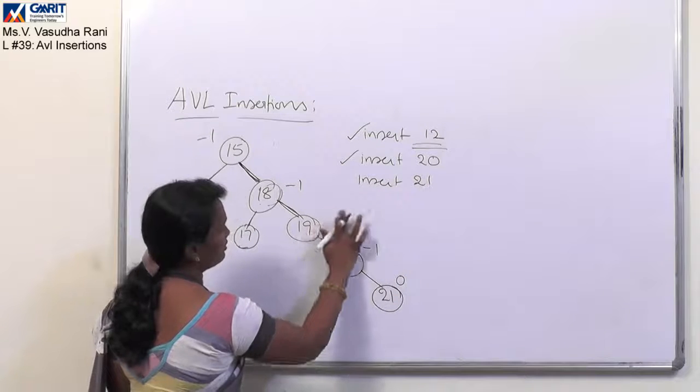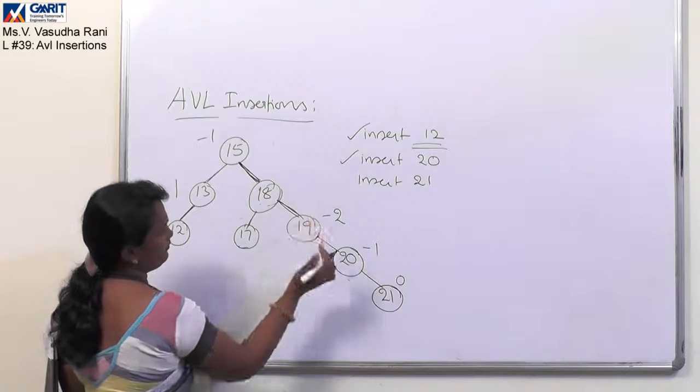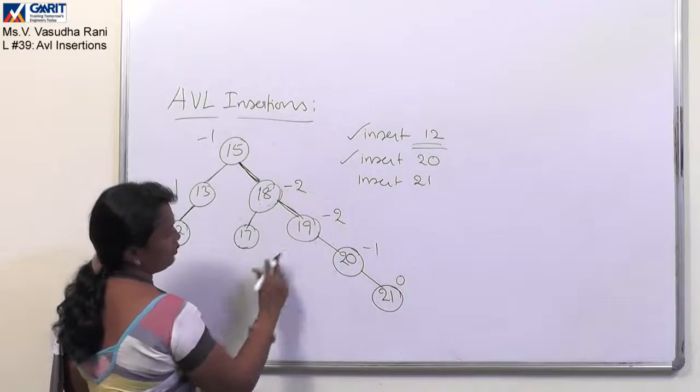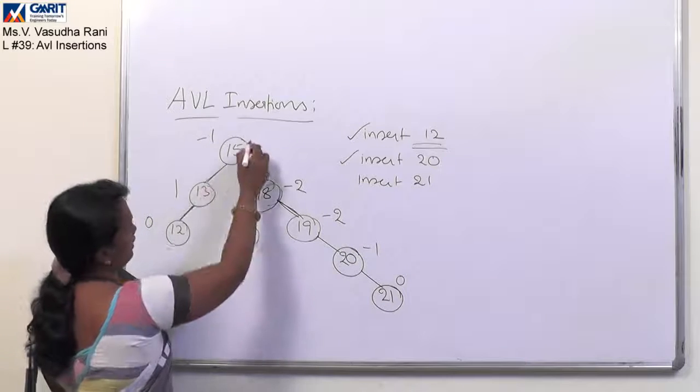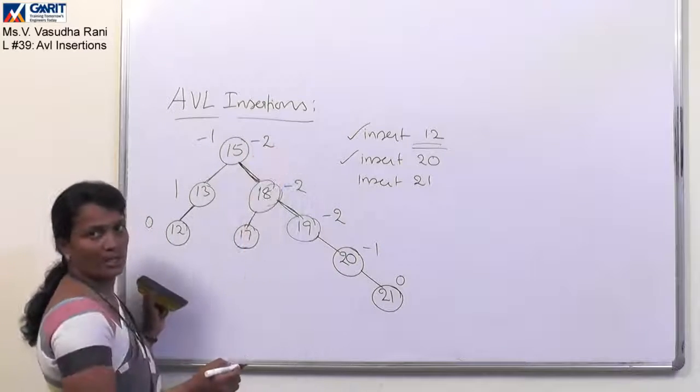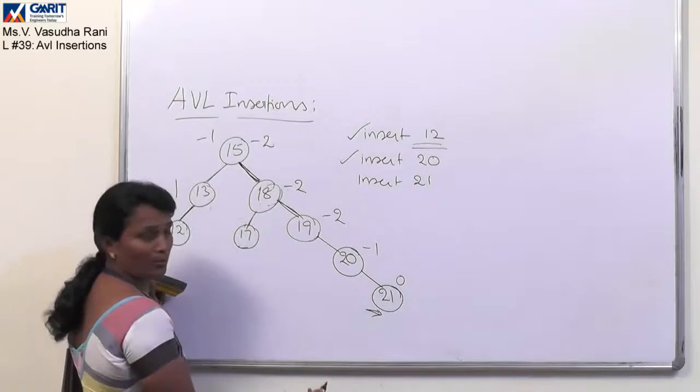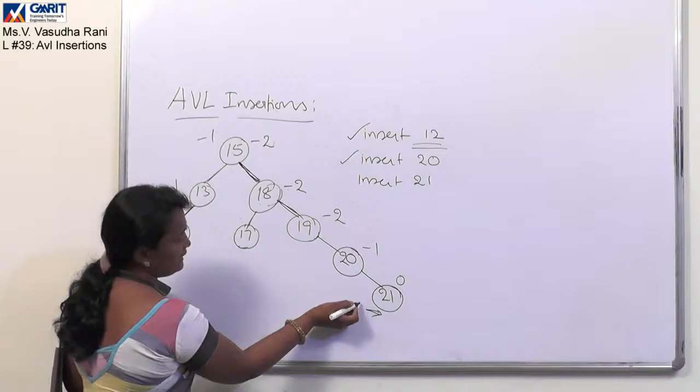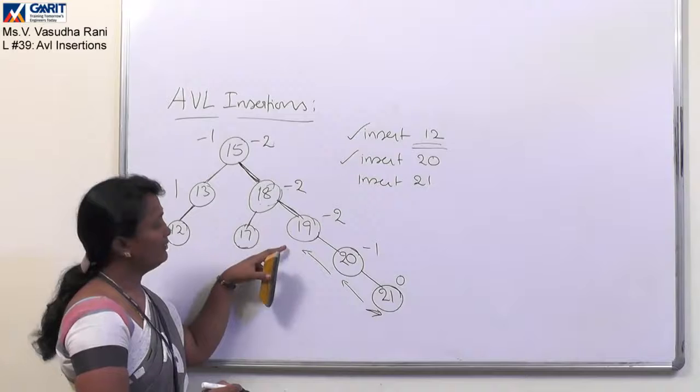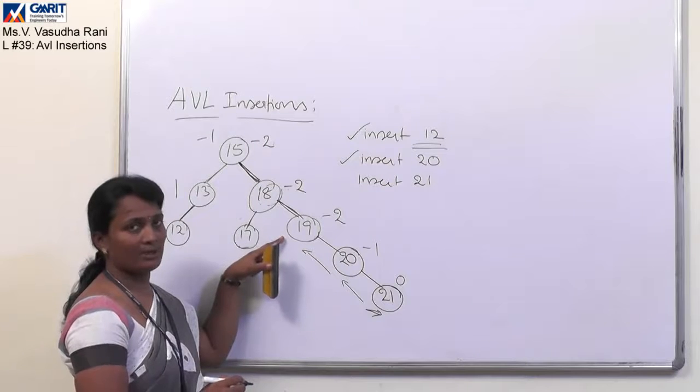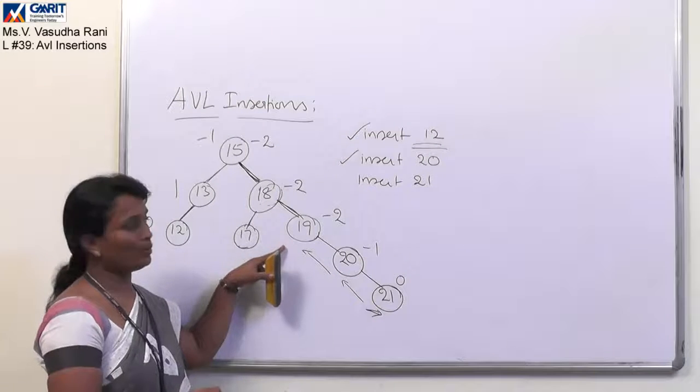Here it will become 0. Here it is minus 1. Here it will become minus 2. And here again it will become the balance factor 1 minus 3, it is minus 2. And here also at the root also it is minus 2. But because of insertion of this particular node, the nearest node that is first failing with the balanced condition, at that node we have to perform the rotation.